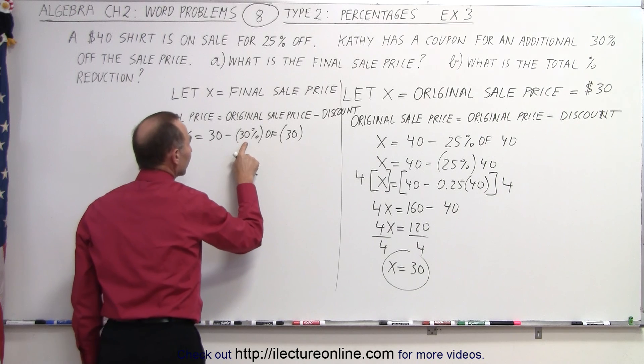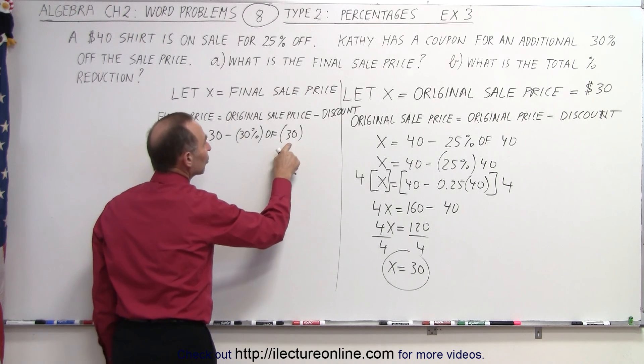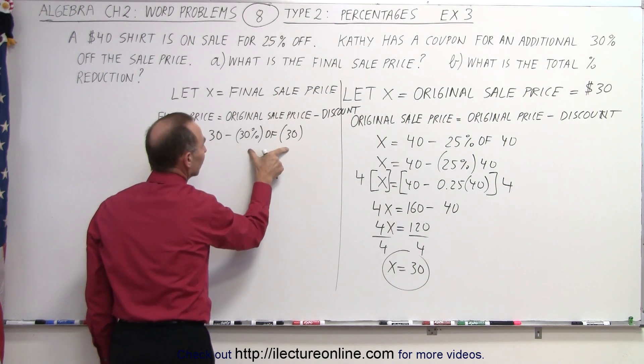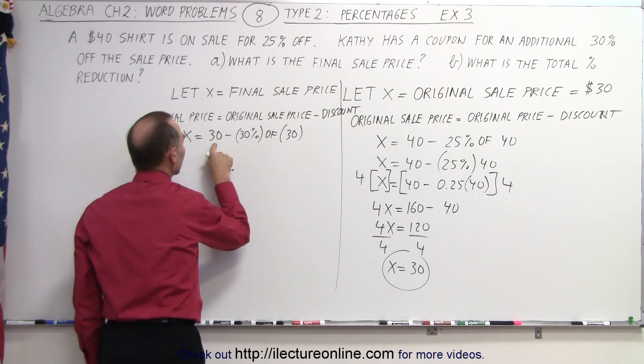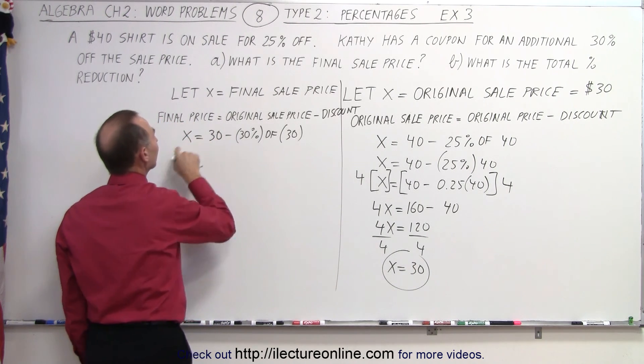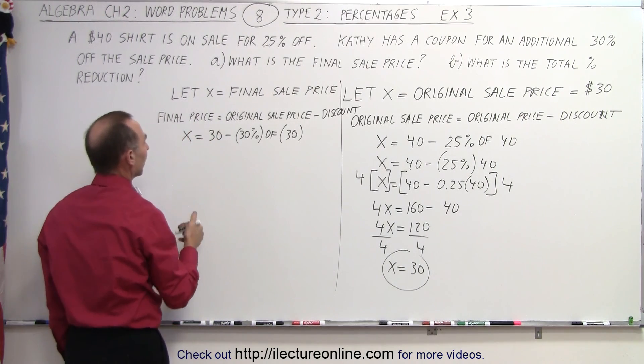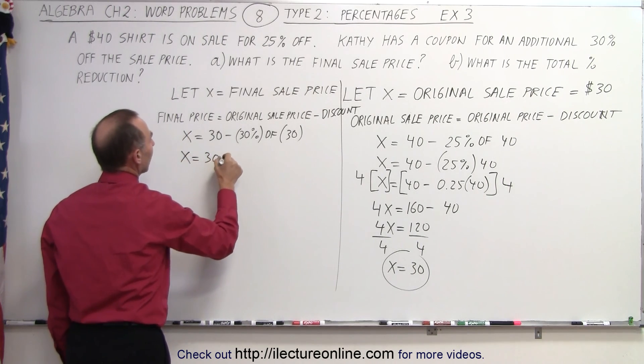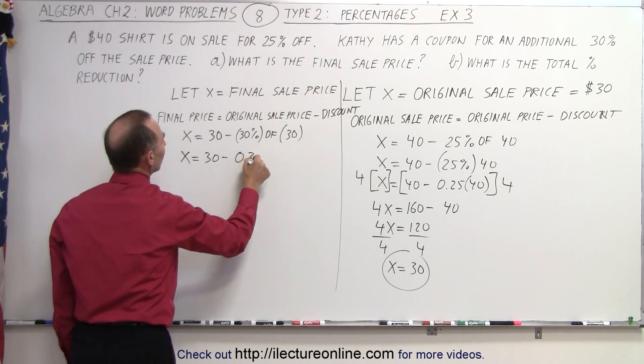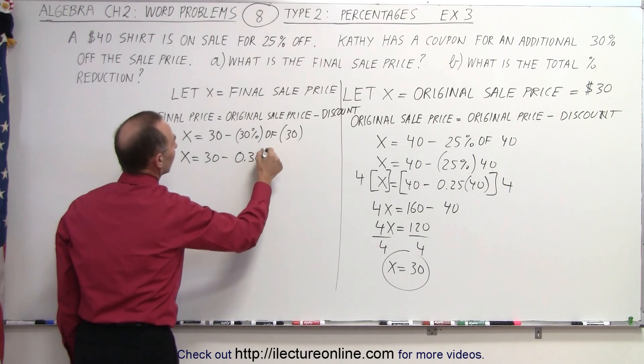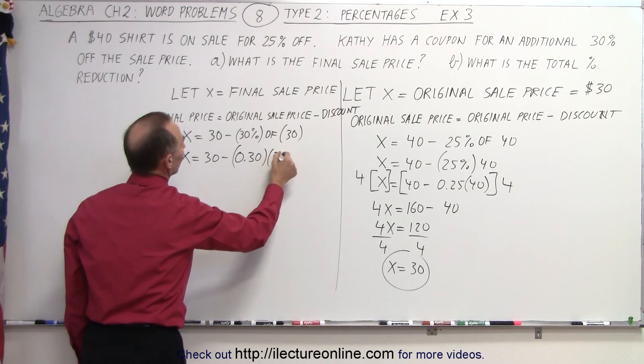So we're getting an additional 30% off the original sale price. And that's the discount subtracted from the original sale price. So x is equal to 30, minus 0.30 multiplied times 30.